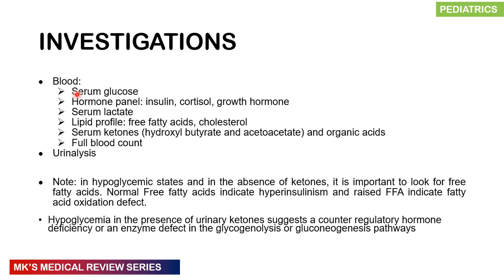Investigations are aimed at assessing blood glucose through a serum glucose estimate, a hormone panel checking for insulin, cortisol, growth hormone, serum lactate, a lipid profile for free fatty acids and cholesterol, serum ketones, beta-hydroxybutyric acid, acetoacetate, and other organic acids. A full blood count with differential and urinalysis can also be done. In hypoglycemic states without ketones, free fatty acids are important: a normal concentration points to hyperinsulinism, while a raised concentration indicates fatty acid oxidation defects. Hypoglycemia with urinary ketones suggests a counter-regulatory hormone deficit or defects in glycogenolysis or gluconeogenesis.